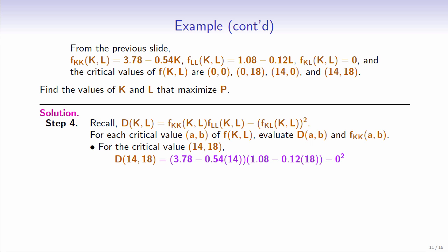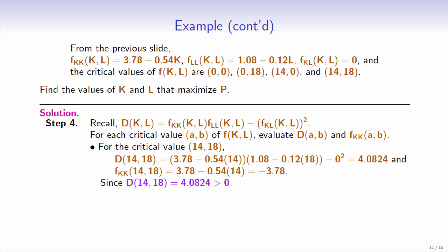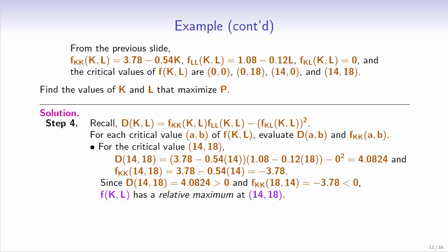For the critical value (14,18), d equals (3.78 minus 0.54 times 14) times (1.08 minus 0.12 times 18) minus 0 squared, which equals 4.0824. fkk equals 3.78 minus 0.54 times 14, which equals negative 3.78. Since 4.0824 is positive and negative 3.78 is negative, f has a relative maximum at (14,18). Therefore, the maximum output is obtained when k equals 14 and l equals 18.